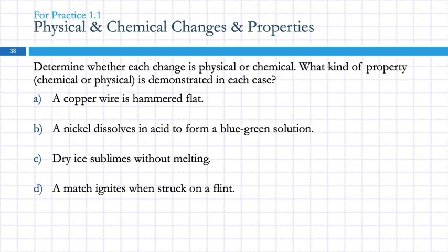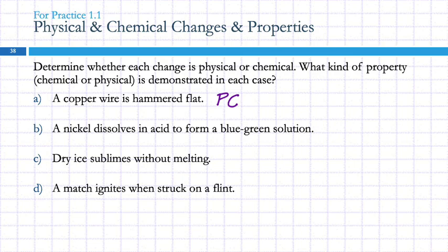Let's practice. Determine whether each change is physical or chemical and what kind of property is demonstrated. A copper wire is hammered flat — physical, because it's still copper. We've just changed the shape. That's a physical change, and we can state that as a physical property: copper wire can be hammered flat. When we demonstrate that, it's just a physical change, so it's a physical property.